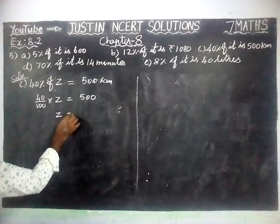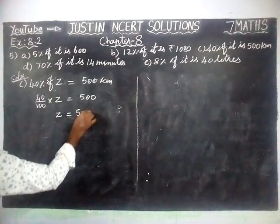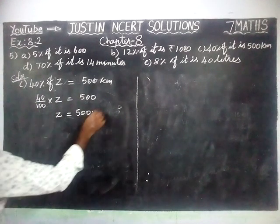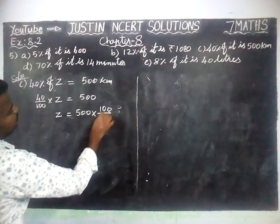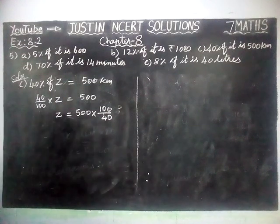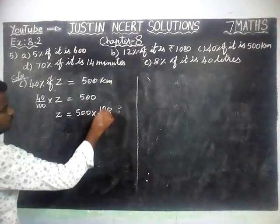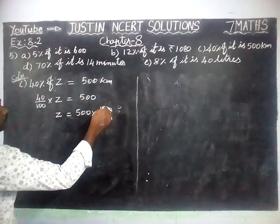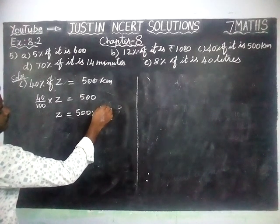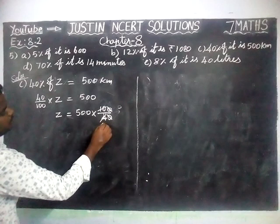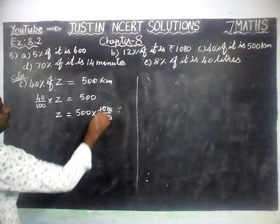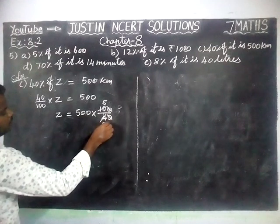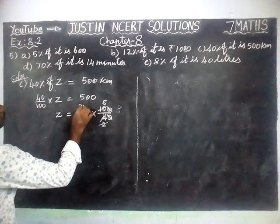Now Z is equal to 500 into the reciprocal of 40 by 100, which is 100 divided by 40. The zeros get cancelled. We cannot simplify directly by 4, so we divide by 2: 2 twos are 4, 5 twos are 10. Now simplify: 1 two is 2, giving 250.